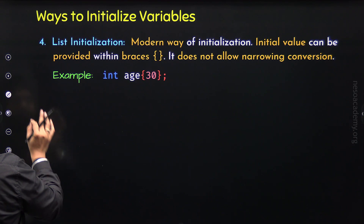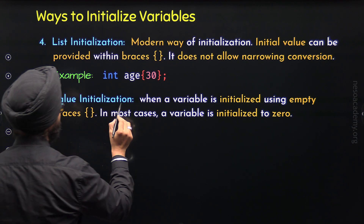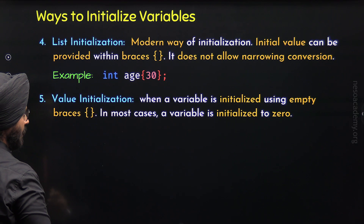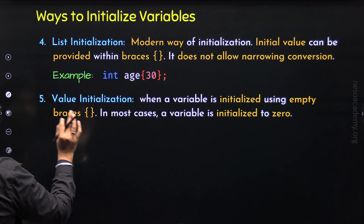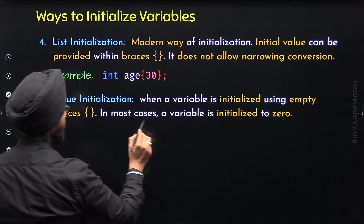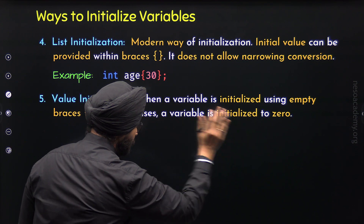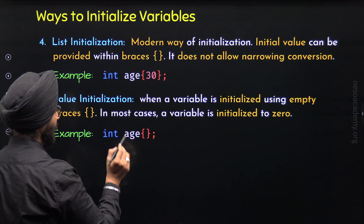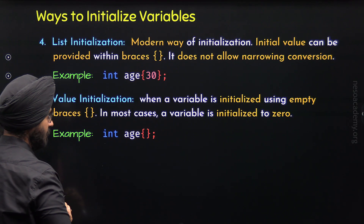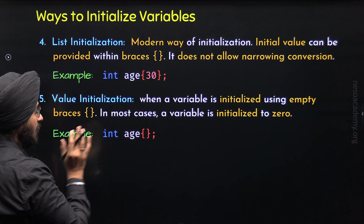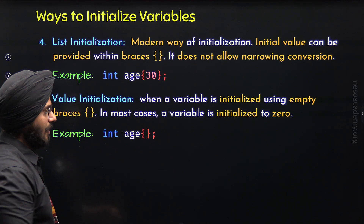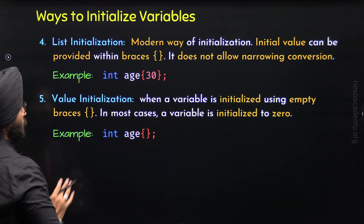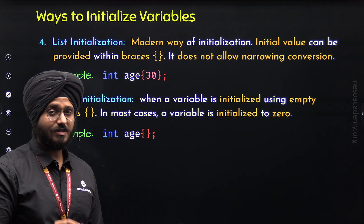The fifth way is Value Initialization. When a variable is initialized using empty braces, it is called Value Initialization. In most cases, the variable is initialized to zero or a value near zero. For example, variable age initialized with empty braces will get value zero because it is an integer variable. This is also called Zero Initialization.